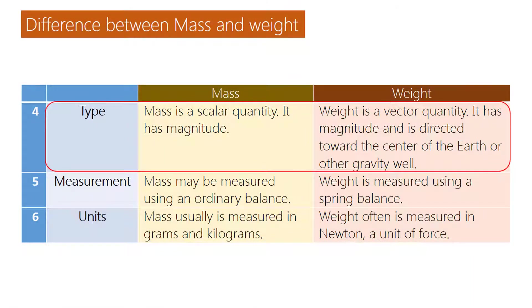Type of mass: Mass is a scalar quantity. It has magnitude. Type of weight: Weight is a vector quantity. It has magnitude and is directed towards the center of the earth or other gravity well.